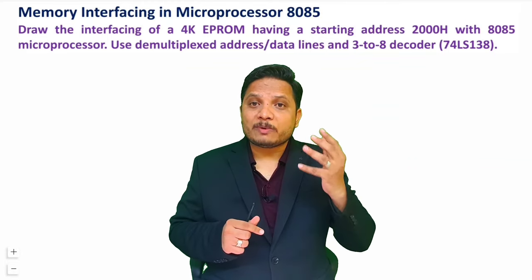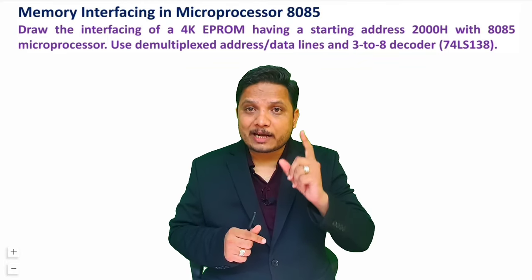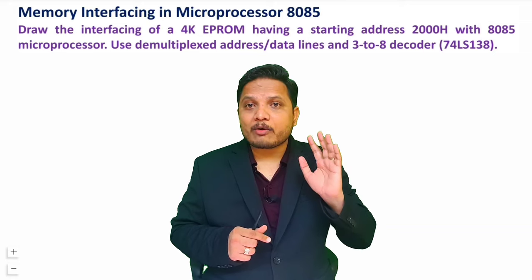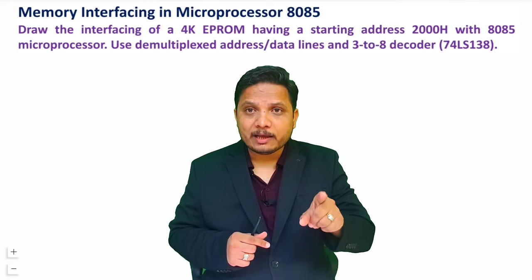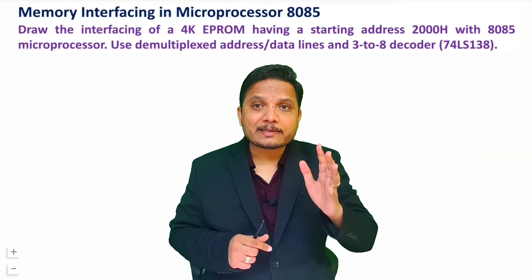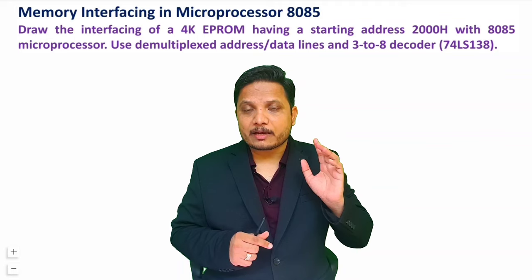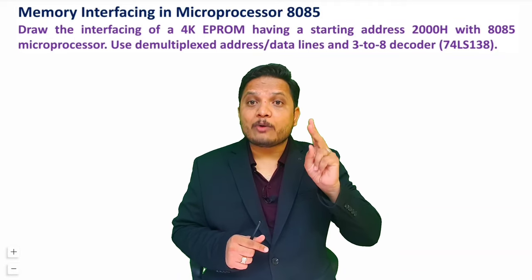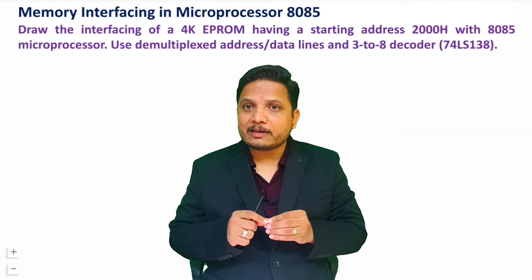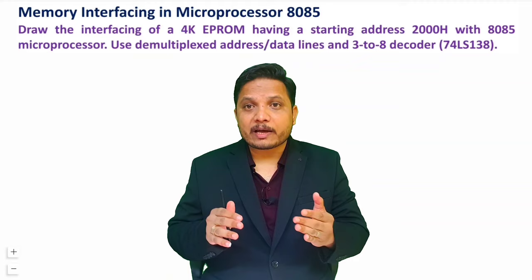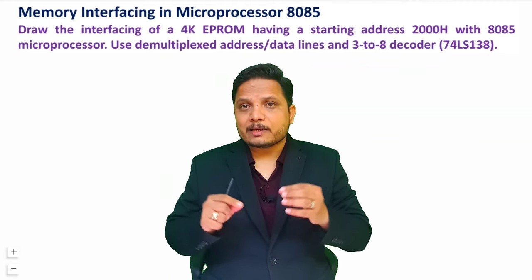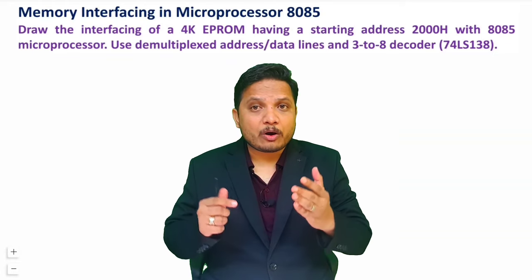First, you should know how many categories of signals you will have to interface. You need to identify how many address lines are required, how many data lines are required, and how many control signals are required. Address and data lines can be directly identified based on the size of memory given to you, but control signals depend on whether you use RAM or ROM.